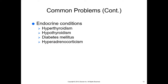Common endocrine problems in older animals include hyperthyroidism in cats, which typically occurs in older animals; hypothyroidism in dogs, which usually develops in middle-age to older animals; diabetes mellitus, which can occur in middle-age to older animals; and hyperadrenocorticism, or Cushing's disease, which usually occurs in older animals.